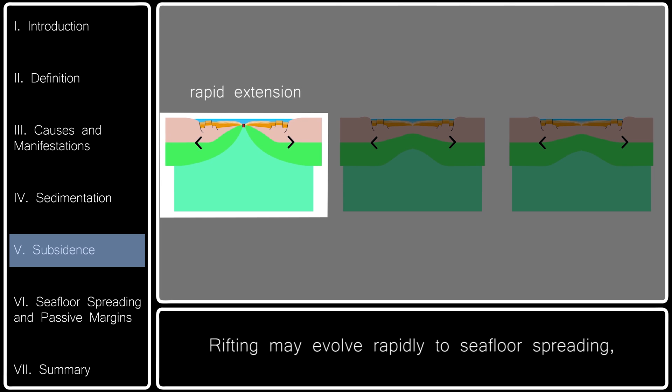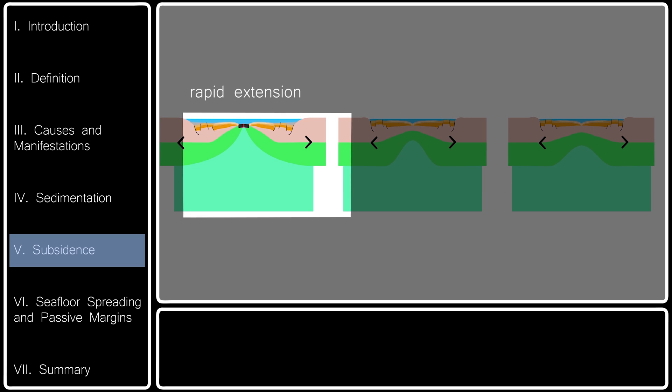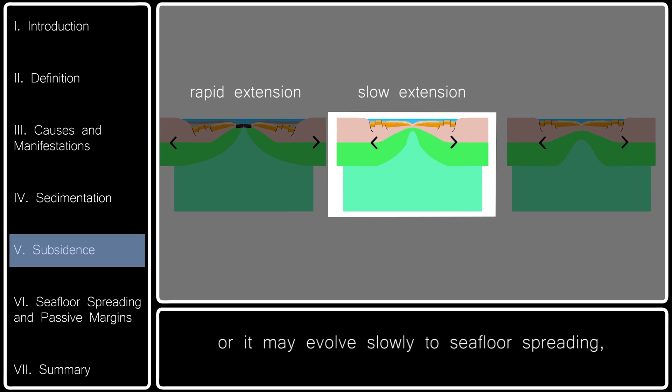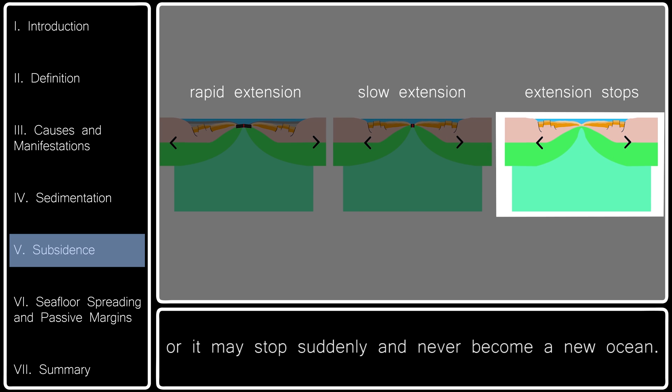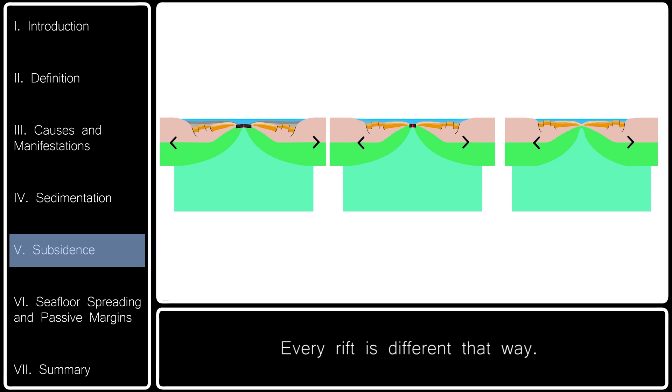Rifting may evolve rapidly to seafloor spreading, or it may evolve slowly to seafloor spreading, or it may stop suddenly and never become a new ocean. Every rift is different that way.